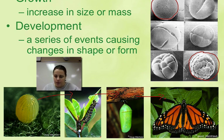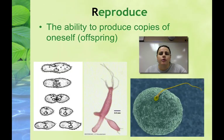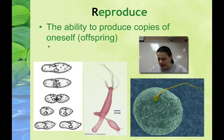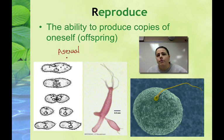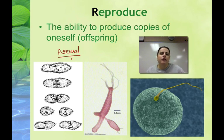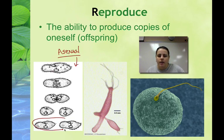Frogs do the same thing, as do many organisms. The next characteristic is reproduction — passing on traits to offspring. This can be done in one of two ways: asexually or sexually. In asexual reproduction, you only need one parent, and that parent organism creates clones of itself. The offspring are genetically identical to the parent. This paramecium splits into two — that's called binary fission.